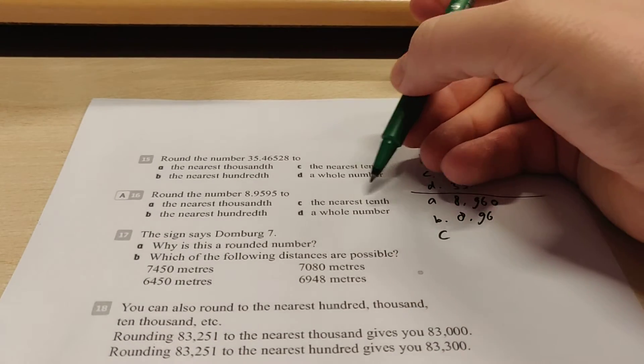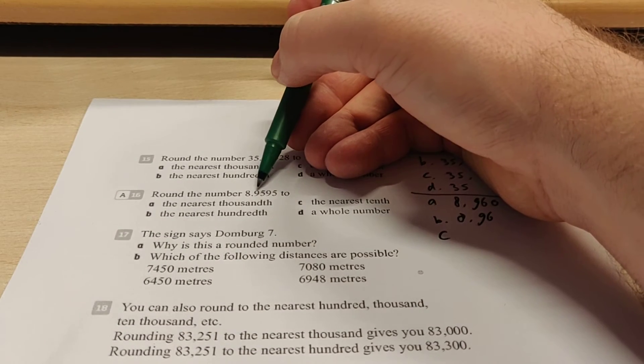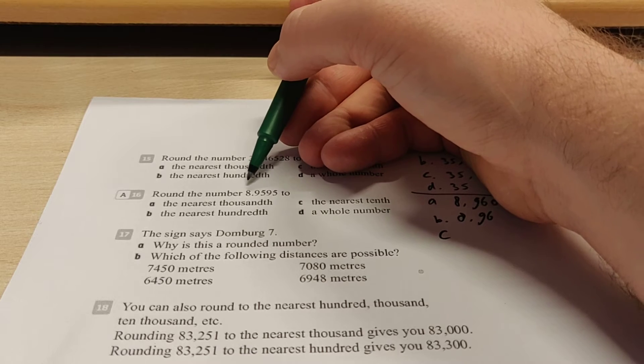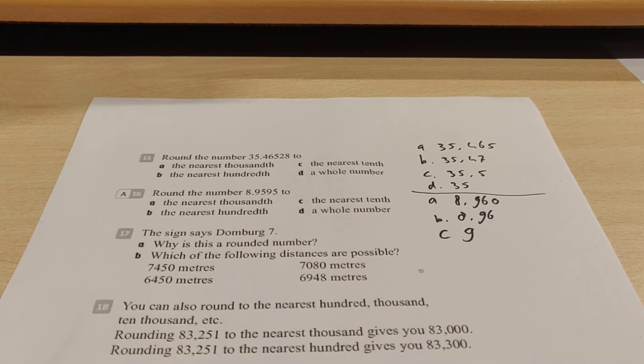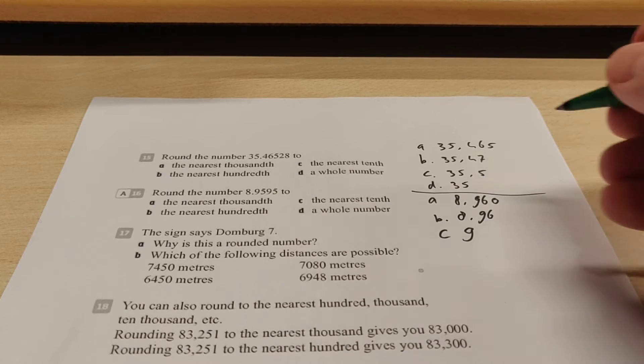Exercise C, round off to the nearest tenth. So that's this number over here. Next to it, there's a 5. So it goes up, so that means it becomes 9. Now you can write down 9.0, but you don't have to. So this will be enough.